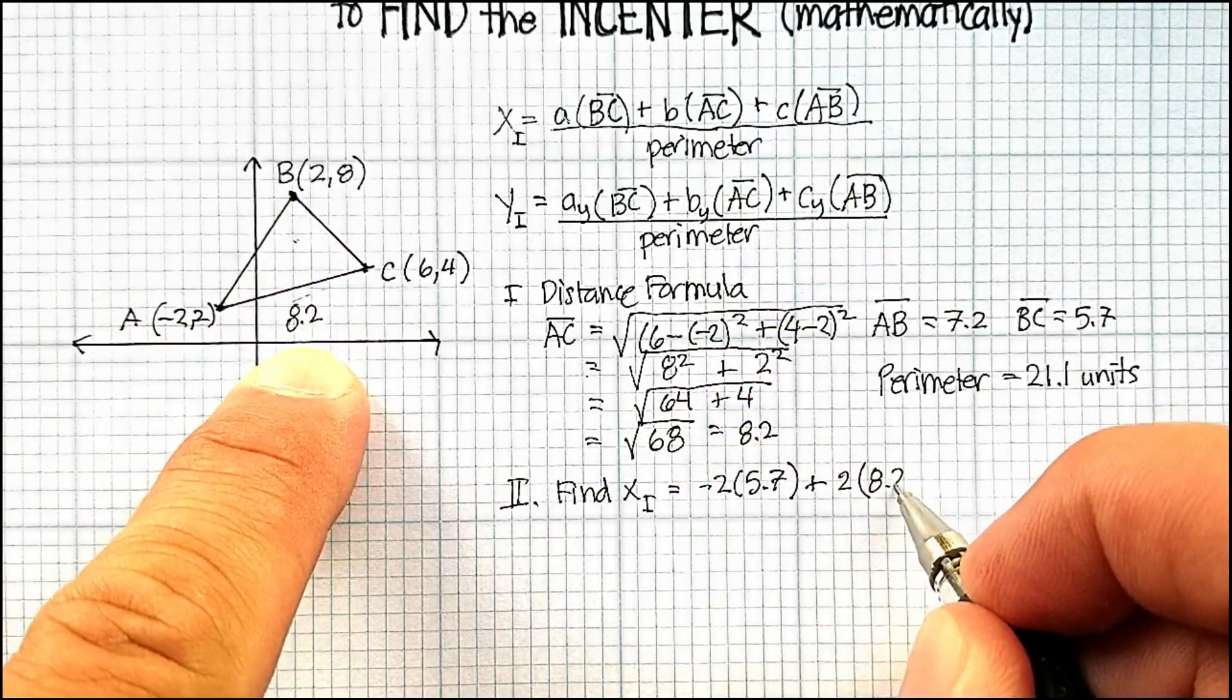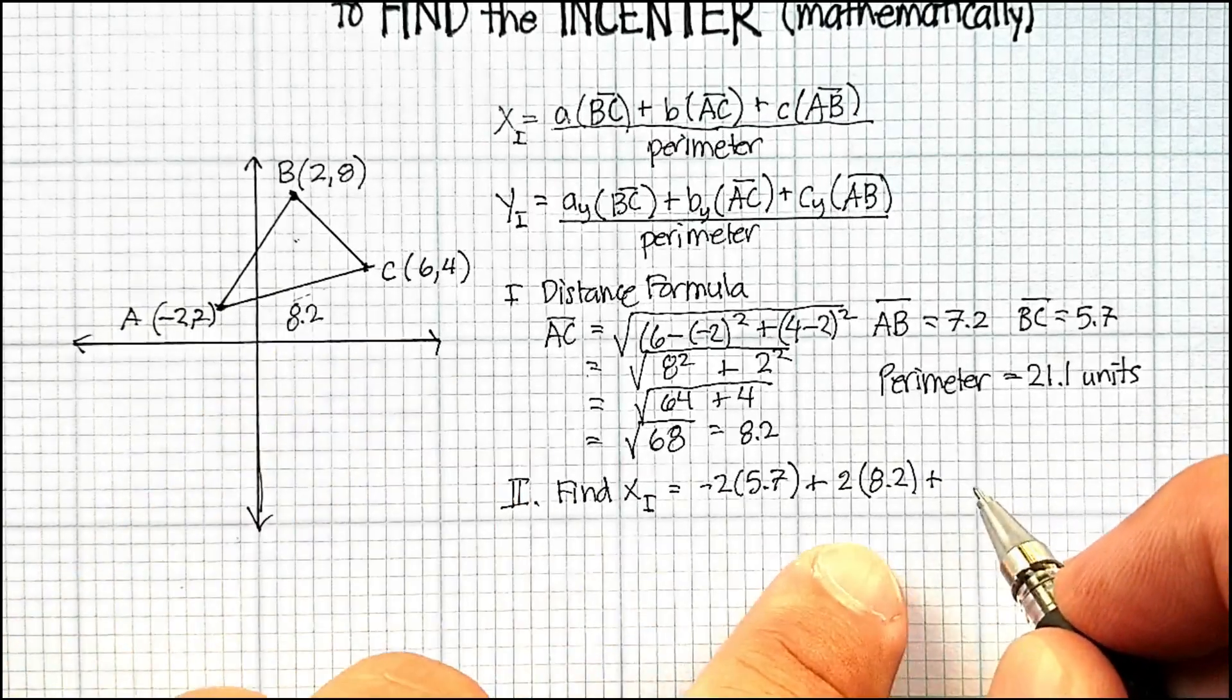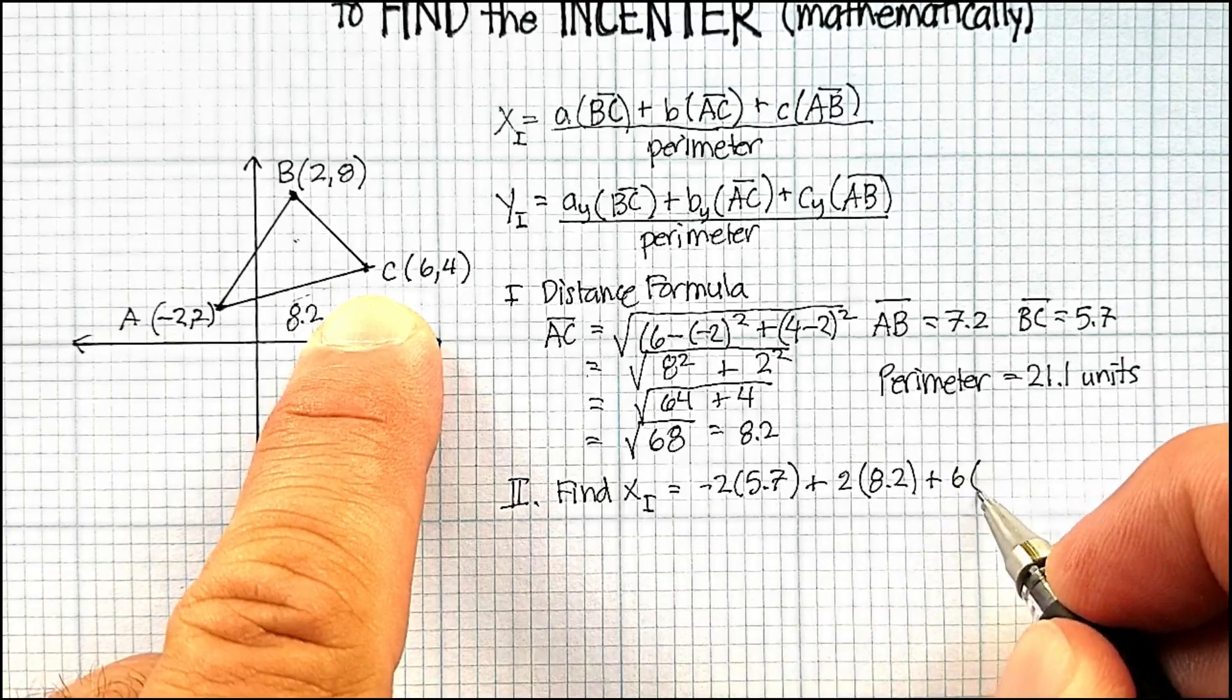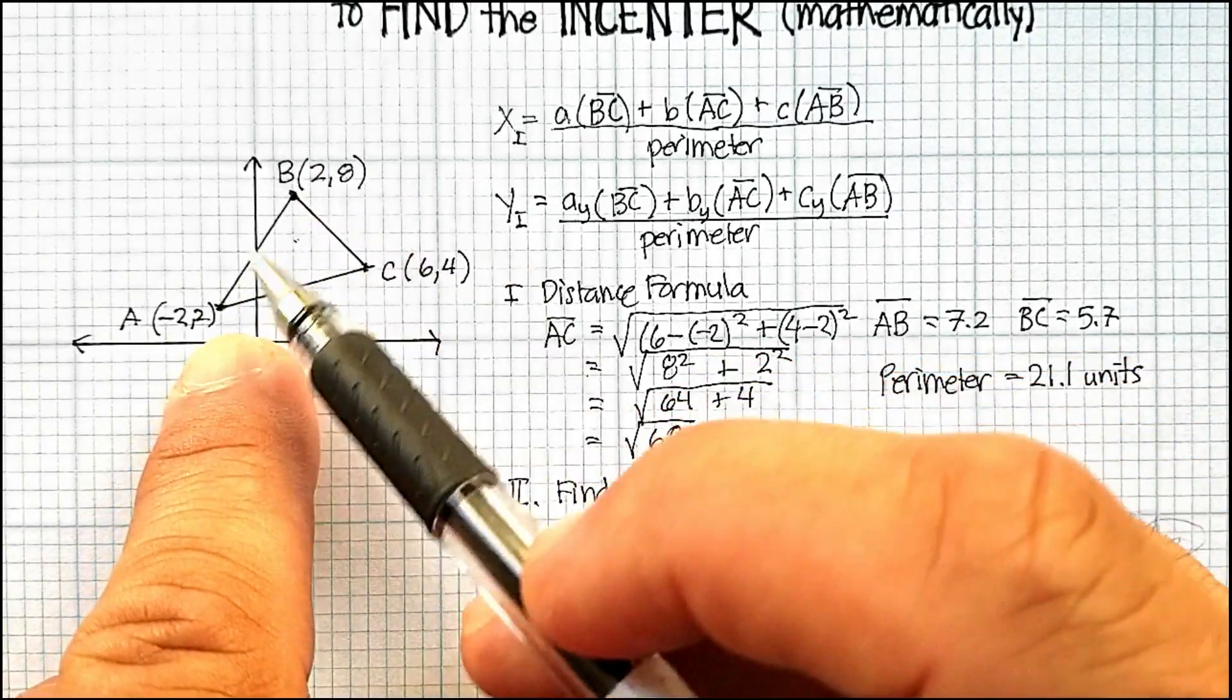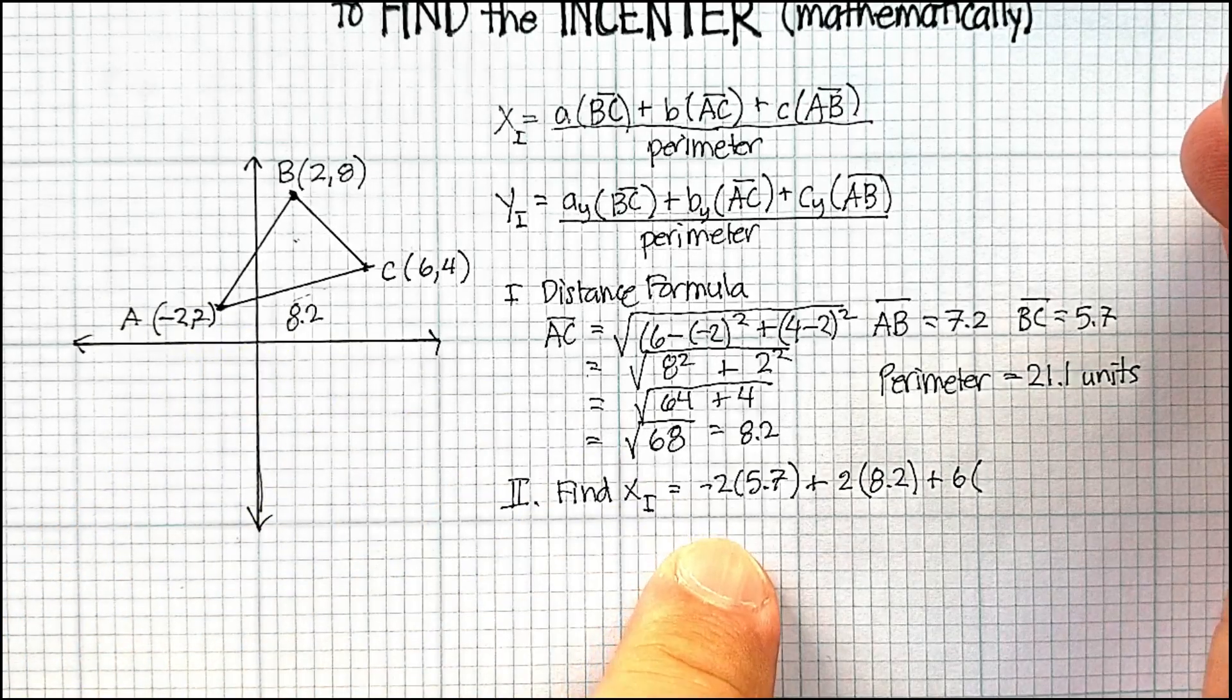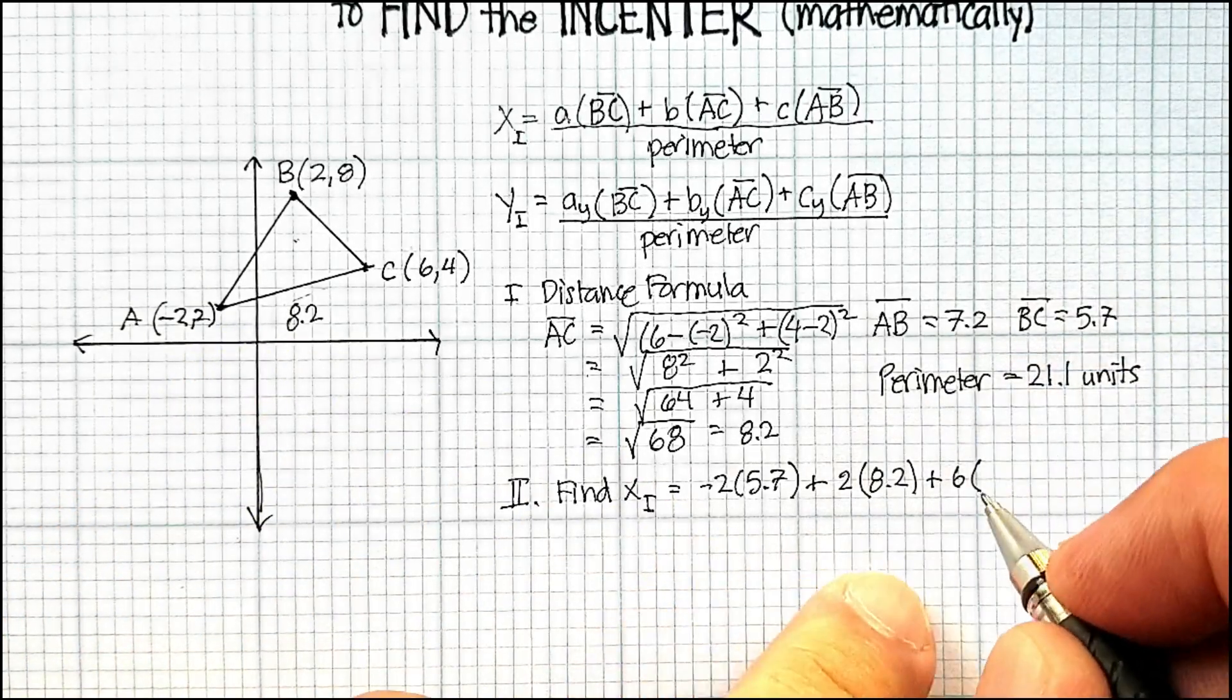Plus the x value for c, which is 6, times the opposite side, or in other words, just AB. Did I do that right? I think I did. And AB, I said, was 7.2.